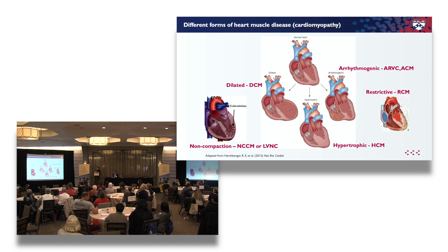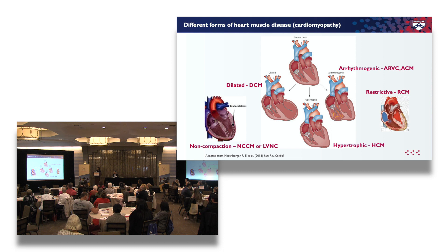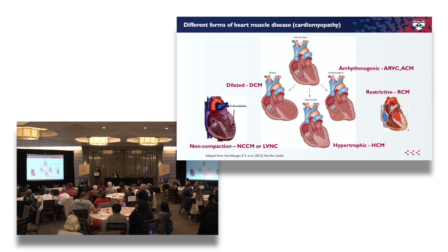There are a couple of subtypes that are less common but still very important. One is called non-compaction: the heart is dilated and big but also has a spongy appearance to the inside of the heart walls, pictured here. Finally, we have restrictive cardiomyopathy — a bit more rare and an offshoot of hypertrophic cardiomyopathy where the heart is very stiff but the walls aren't too thick. Those are the general types, and we'll talk about how we tailor your diagnosis and treatment based on what your heart looks like and how it functions.